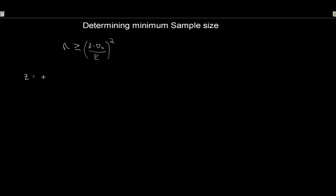Let's talk about what each component is. Z is the level of confidence — for example, do you want your sample mean to cover the true population mean 99%, 95%, 90%, or 80% of the time? This is the same Z we use for confidence intervals. So for a 95% confidence interval, we'd use Z = 1.96, and for 99% we'd use approximately 2.576.